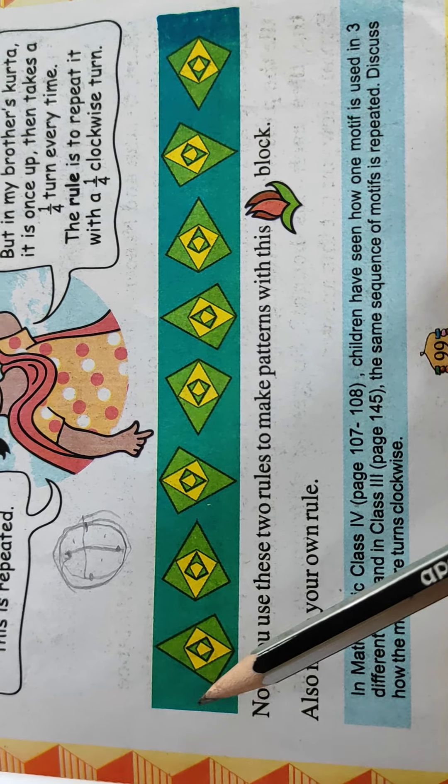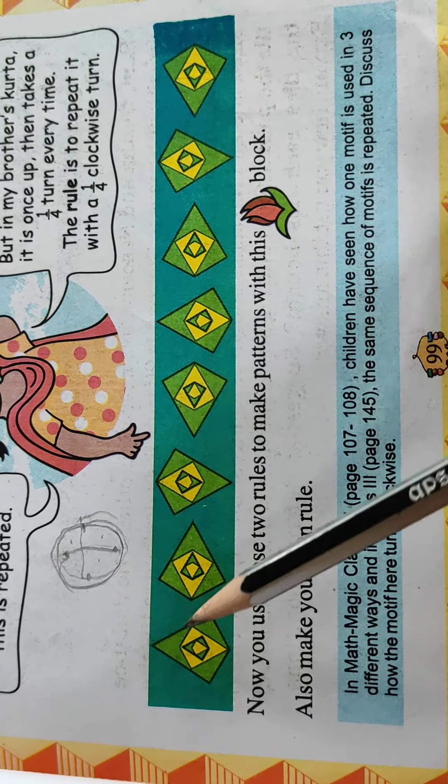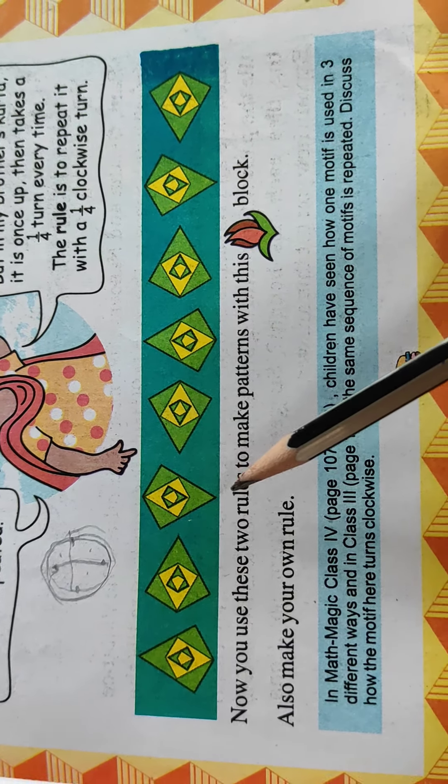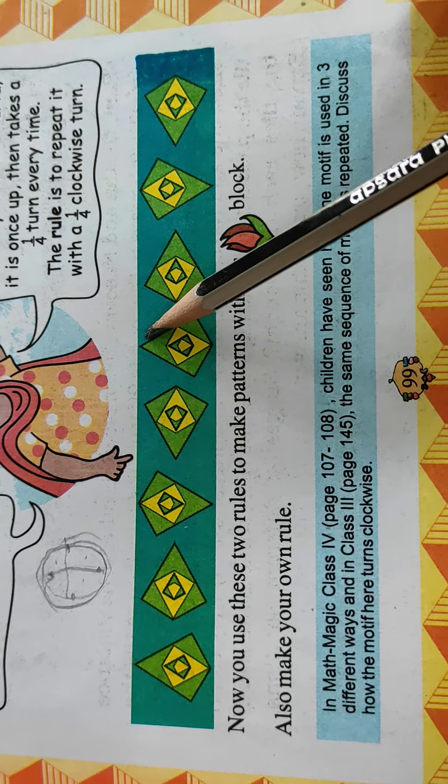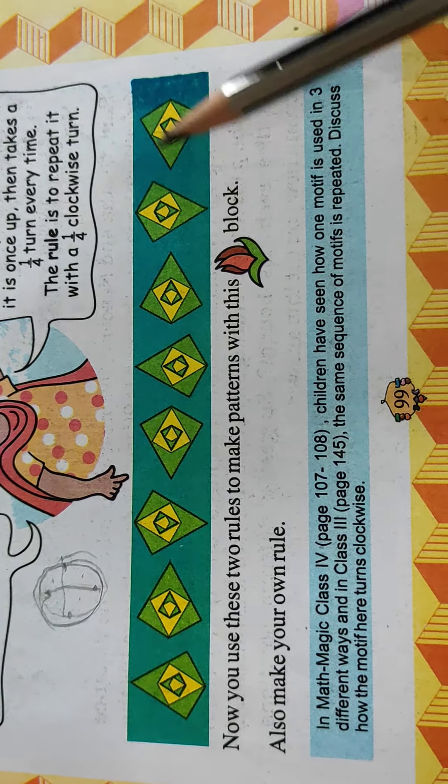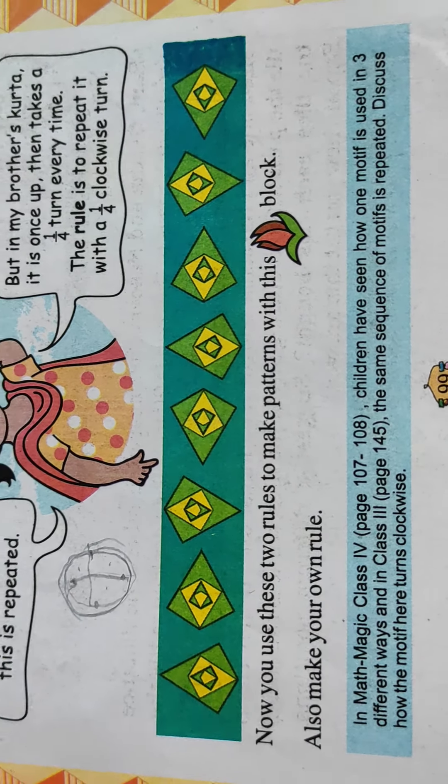So this pattern clockwise - 3, 6, 9, 12. You can see 3, 6, 9, again 12, 3, 6, 9. And the next pattern, easily you can see.